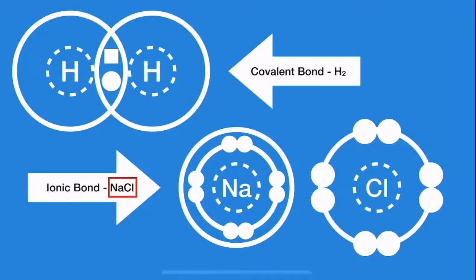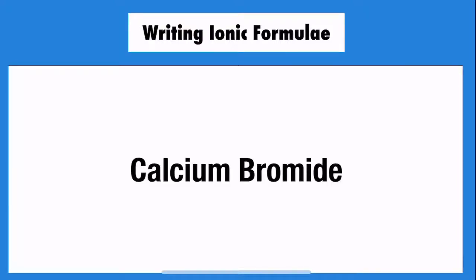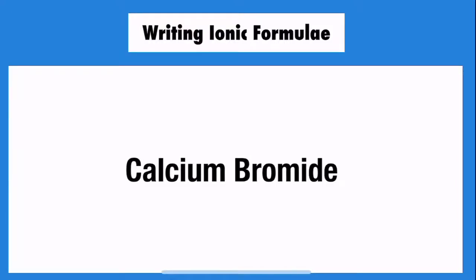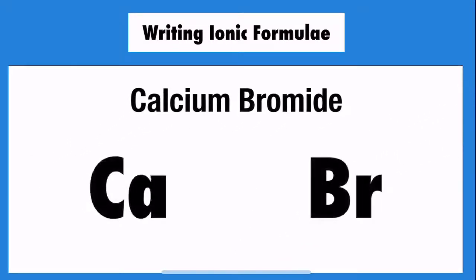So let's start with their formulae. The easiest way to explain this is with an example. Say you have some calcium bromide. What's its formula? First, write down the symbols for each element. Then, add the charges of their ions by writing how many electrons need to be gained, which would be negative, or lost, which would be positive, to have a full outer shell.